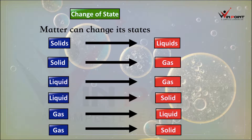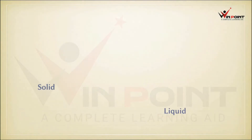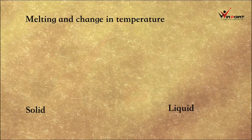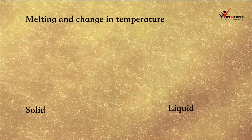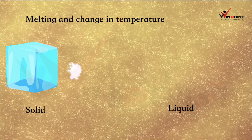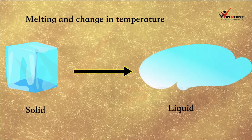We need to give suitable conditions. Now we are going to discuss about melting and change in temperature — what is the relation between melting and changing temperature? Melting is the process of conversion of solid into liquid. When we apply heat to a solid, it converts into liquid, and this process is known as melting.